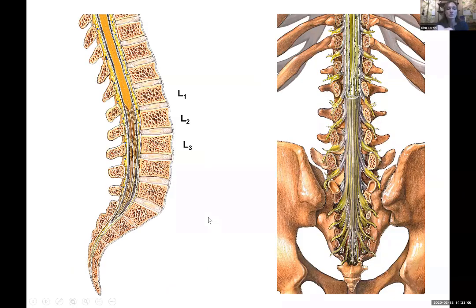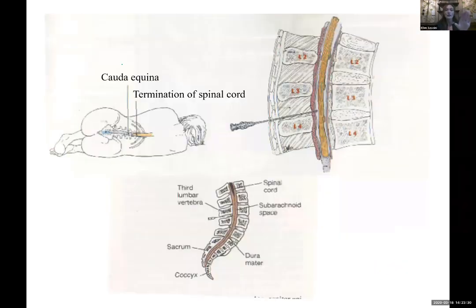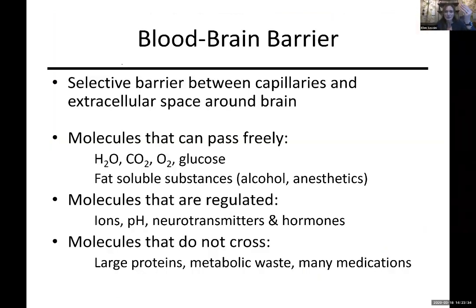The end of the spinal cord is about L1. So if someone's going to do a spinal tap, they're usually between L3 and L4 so the needle as it goes in will not directly harm the spinal cord - it's down where there are nerves that get out of the way. So that's where you tap for a spinal tap. You actually pull out cerebral spinal fluid, so even though you're doing it way down in someone's lower back, you're able to sample fluid that came from inside the brain.